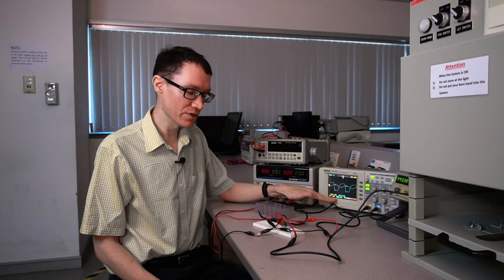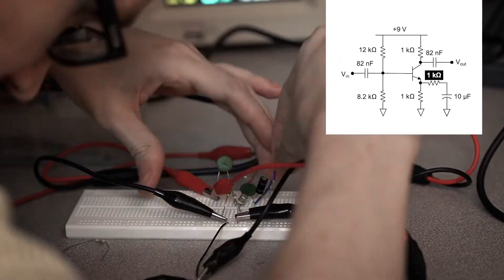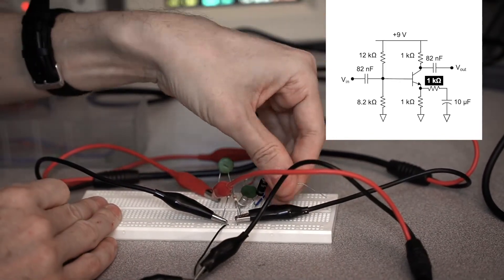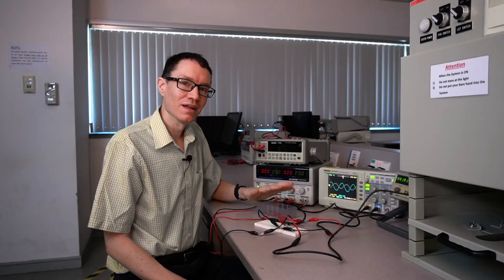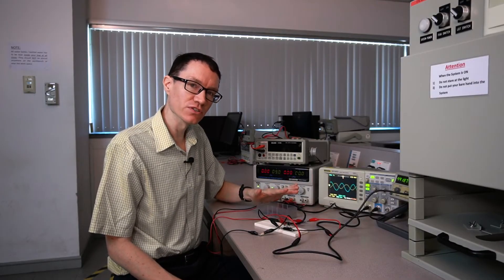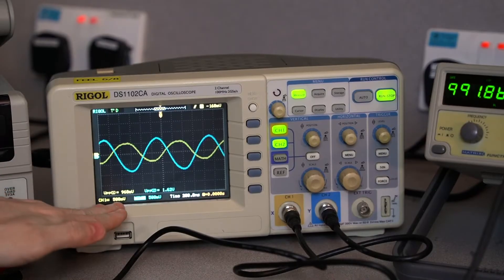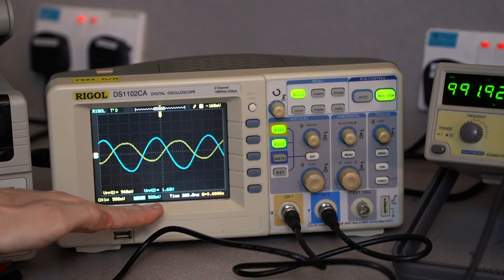To lower the gain a bit and clean up the output, I'm going to take this 1 kilohm resistor and put it in series with the capacitor we just added. After adding that resistor, we now recover a beautiful sine wave at the output, and our gain is approximately 1.6.